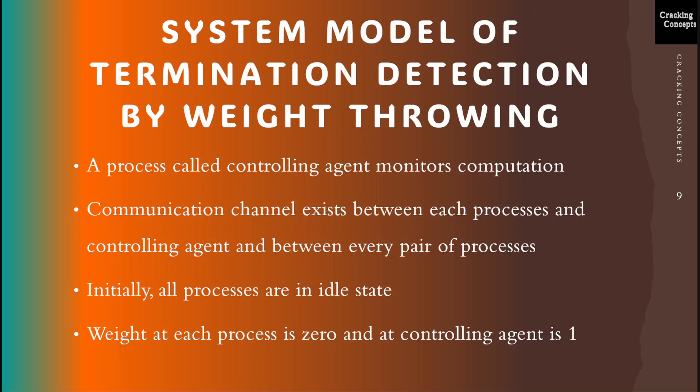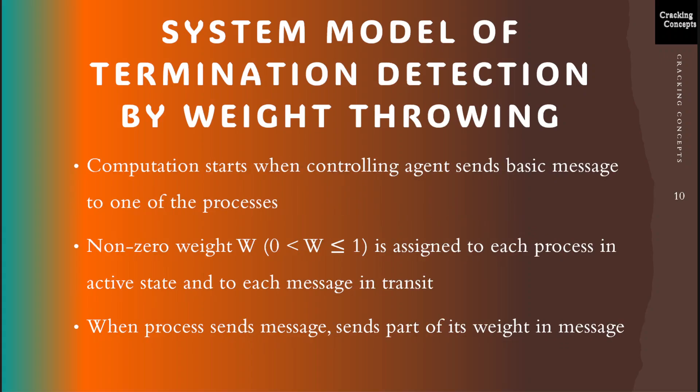Now we look into the system model of termination detection by weight-throwing. A process called the controlling agent will monitor the computation. A communication channel exists between each of the processes and the controlling agent, and also between every pair of processes. Initially all processes are in the idle state. The weight at each process is 0 and the weight at the controlling agent is 1. The computation starts when the controlling agent sends a basic message to one of the processes. A non-zero weight W, where W is in the range of 0 to 1, is assigned to each process in the active state and to each message in transit. When a process sends a message, it sends a part of its weight in the message.